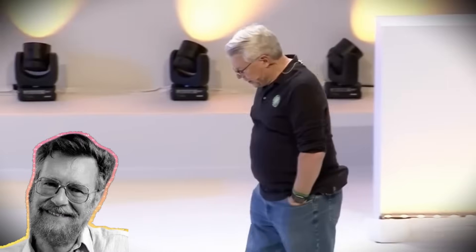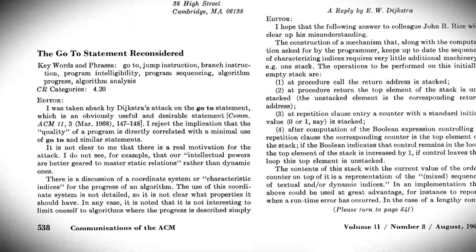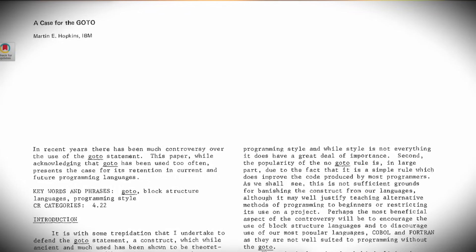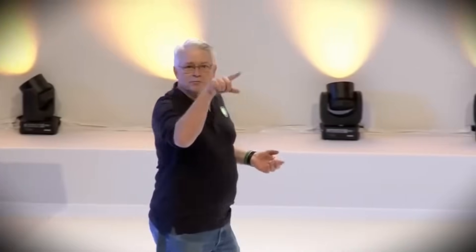In 1968, Dijkstra wrote a letter to the editors of one of the famous magazines at the time, and he said that go-to was considered harmful. It was a very famous note, and it kind of caused an uproar in the software community, because during those days, go-to was how we got things done. We used go-to for everything — we had if statements that would have go-to's in them, we didn't have languages that had while loops in them. We would just use go-to's all over the place. Anybody here remember Fortran?